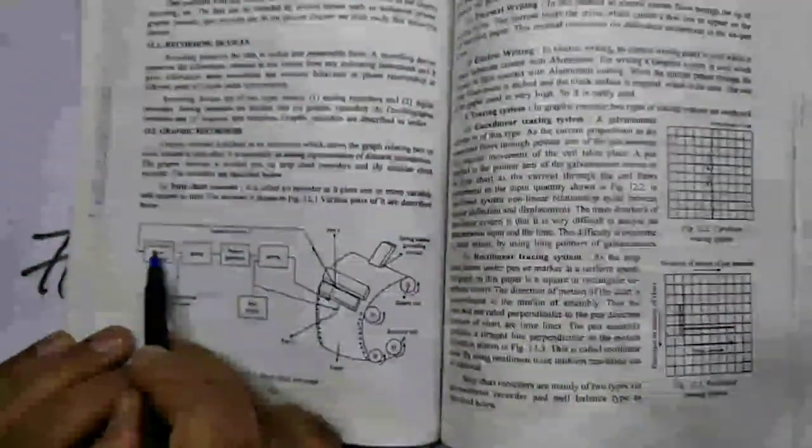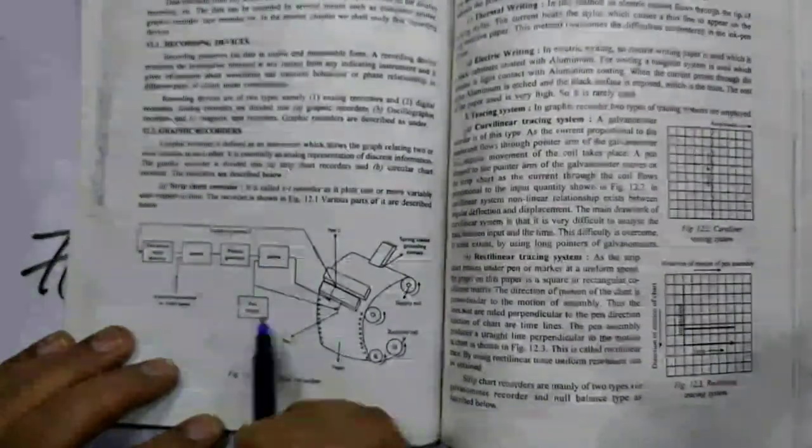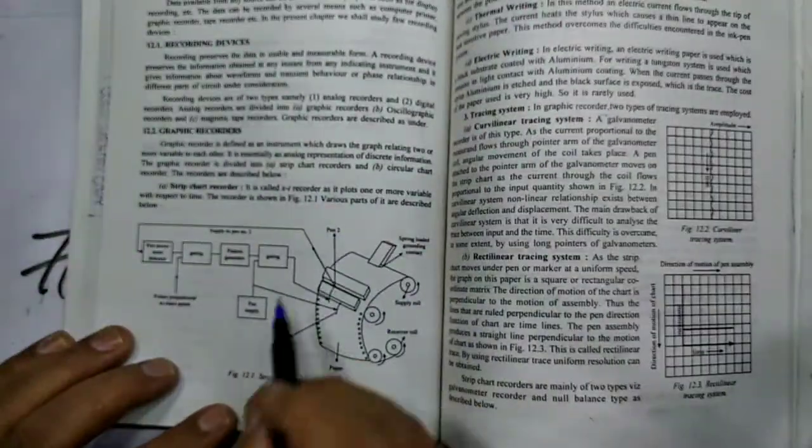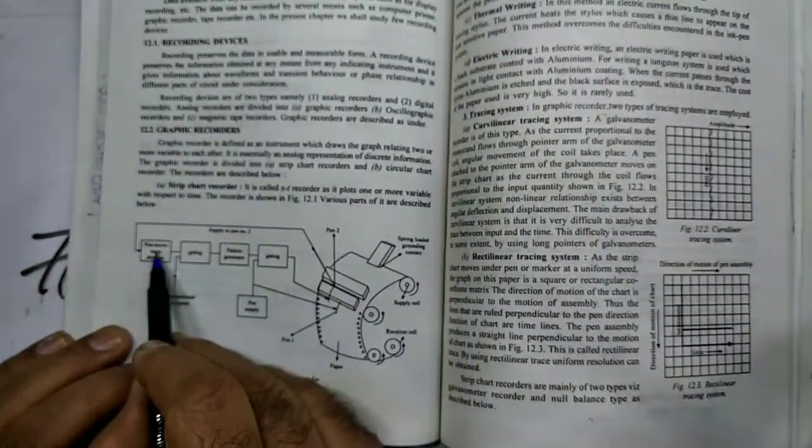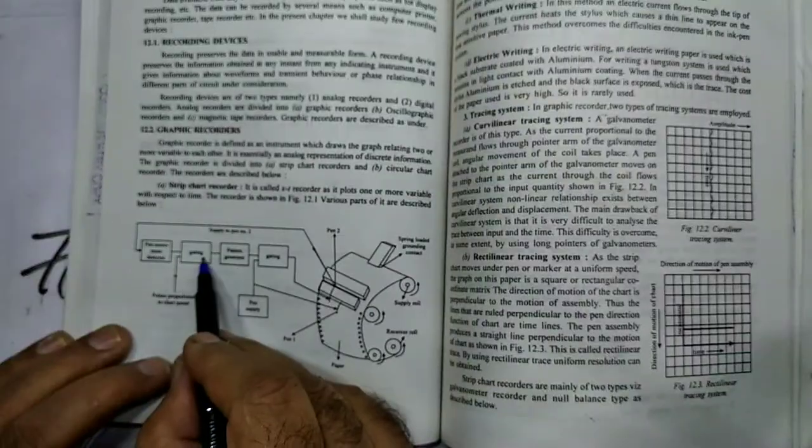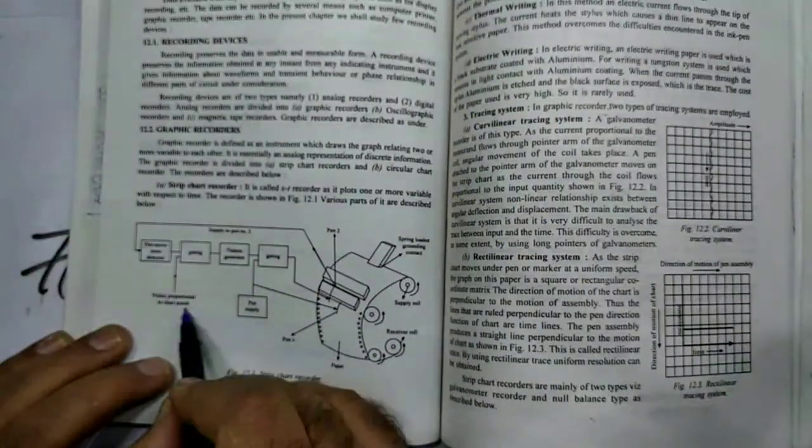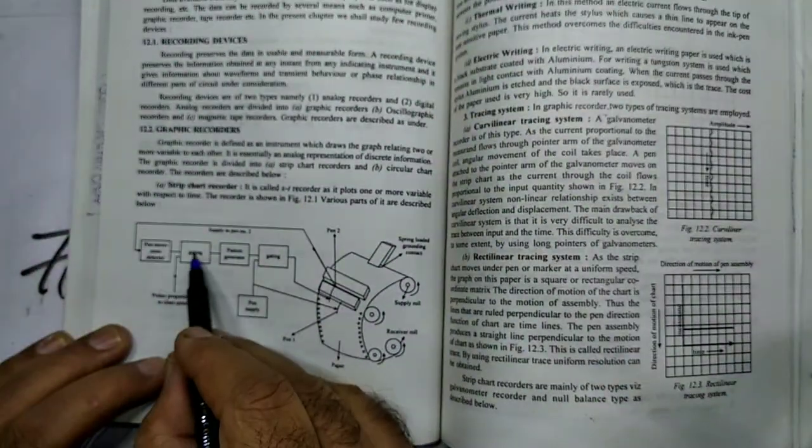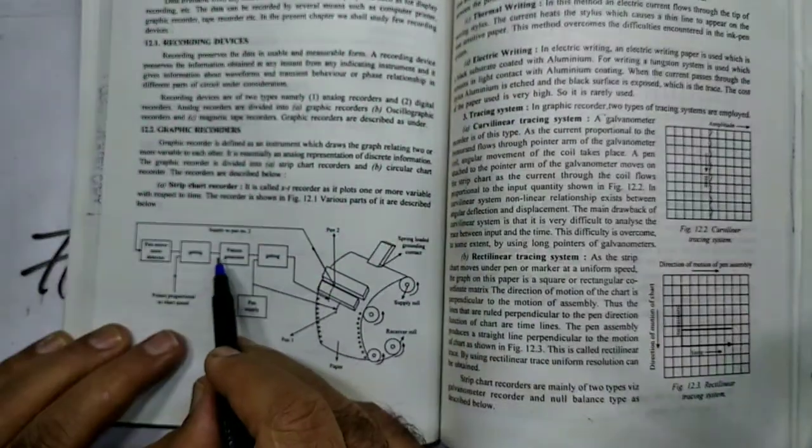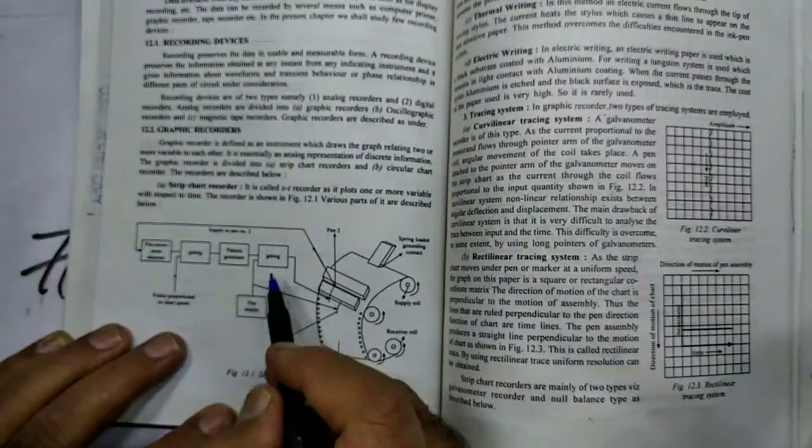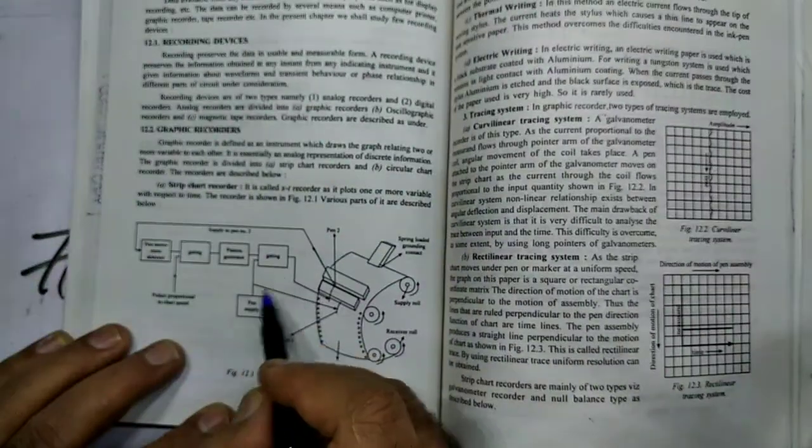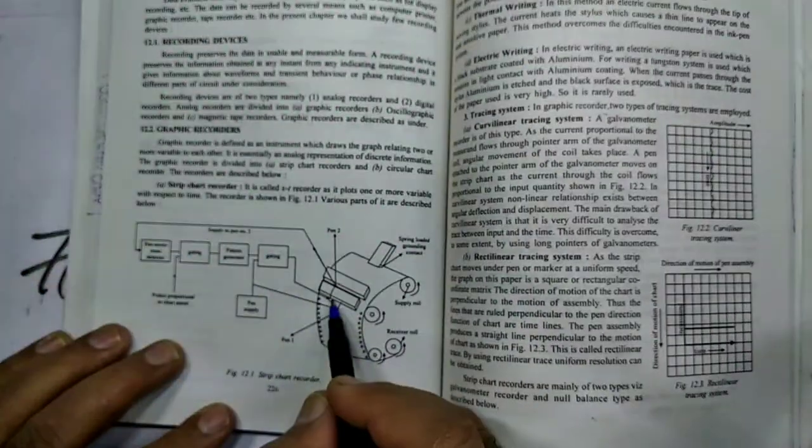This is a block diagram of the strip chart recorder where the first block is pen movement detector. Second is gating. The pulse proportional to chart speed is given to this gating block. Pattern generator, and the fourth one is gating the pen supply. And the pen supply is given to the pen.